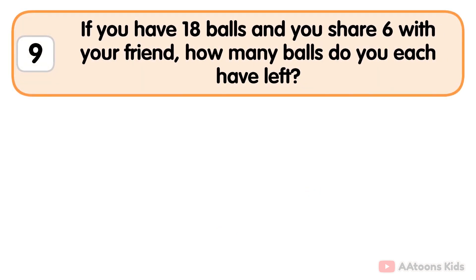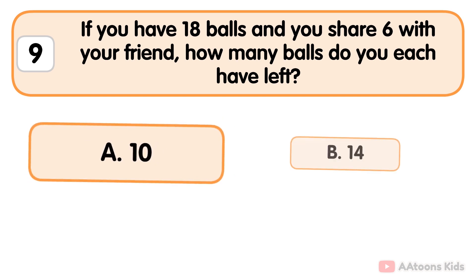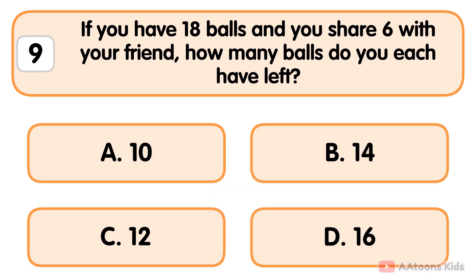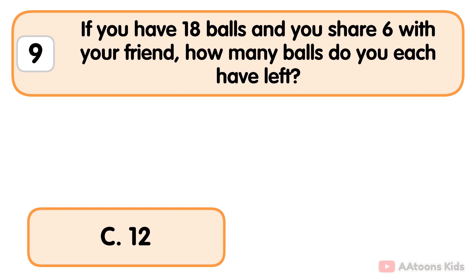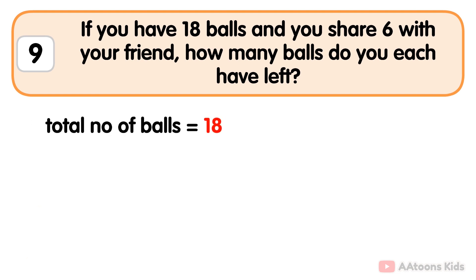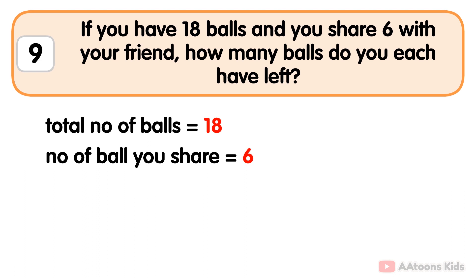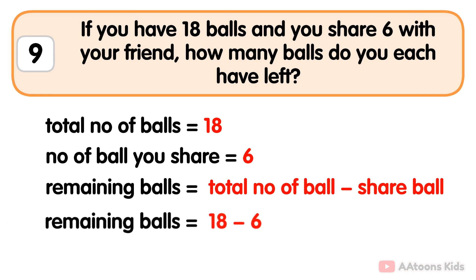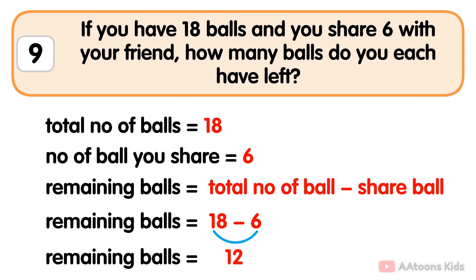If you have 18 balls and you share 6 with your friend, how many balls do you have left? 12. The total number of balls is 18, the number of balls you share is 6. To find the remaining balls, simply subtract: total number of balls minus shared balls. 18 minus 6 is 12. So you have 12 balls left.